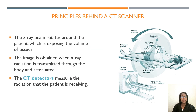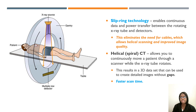The principles behind a CT scanner: the x-ray beam rotates around the patient, exposing a volume of tissues. The image is obtained when x-ray radiation is transmitted through the body and attenuated. CT detectors measure the radiation transmitted through the patient. Slip ring technology enables continuous data and power transfer between the rotating x-ray tube and the detectors, eliminating the need for cables, which allows helical scanning and improved image quality. Helical/spiral CT allows you to continuously move a patient through the scanner while the x-ray tube rotates, resulting in a 3D data set that can be used to create detailed images without gaps.